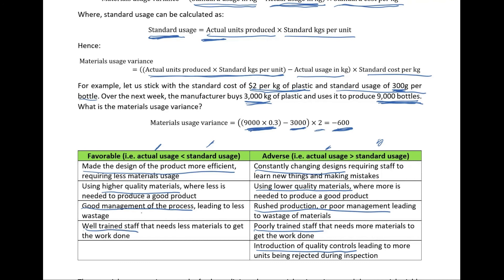As we've seen, some reasons for adverse variances aren't necessarily bad, and some reasons for favorable variances aren't necessarily good. For example, introducing quality controls means the final product will have higher quality because defective finished goods are rejected. So even if that results in a bit more wastage and causes an adverse materials usage variance, it's not necessarily a bad thing.